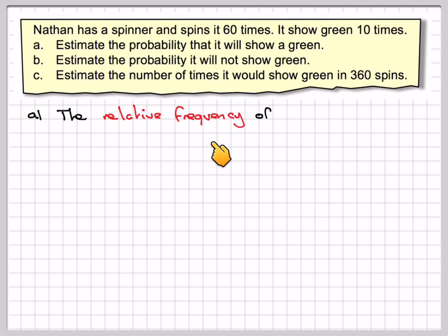So the relative frequency of showing a green is 10 because it goes 10 times when you throw it out of 60. Therefore an estimate of the probability is in the correct notation P brackets green. It is 10 over 60. 10 over 60 counts down to 1 sixth.